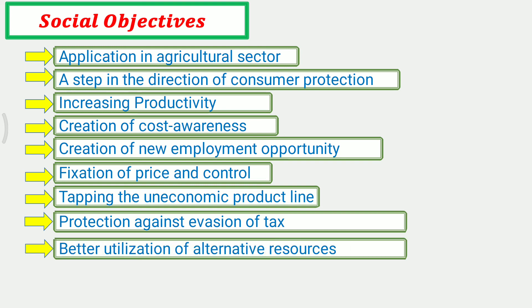Next objective is Better Utilization of Alternative Resources. Generally, contributors' interests are safeguarded through a proper rate of return on their investment. But shareholders' interest does not end when a good dividend is earned by their undertaking. The question would naturally arise as to whether it was not possible to earn better profit with the same resources or through alternative channeling of existing resources by better management. Here, the adoption of the cost audit system may be of greater benefit, as a good control system is an instrument for achieving management objectives.